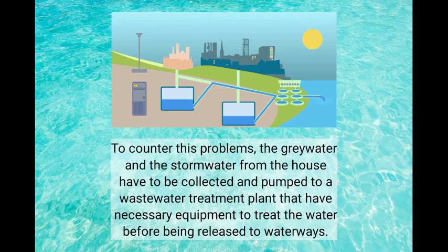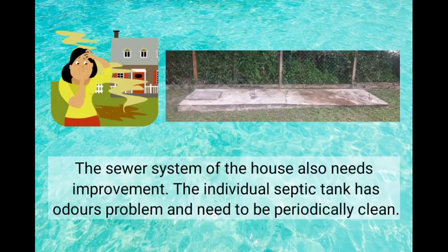To counter these problems, the greywater and stormwater from the house have to be collected and pumped to a wastewater treatment plant that has the necessary equipment to treat the water before being released to waterways. The sewer system of the house also needs improvement.